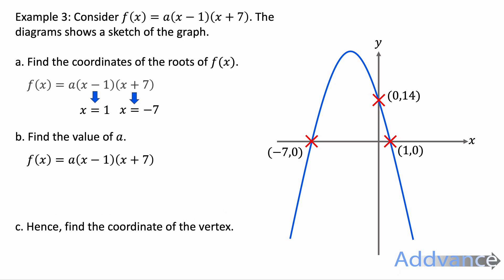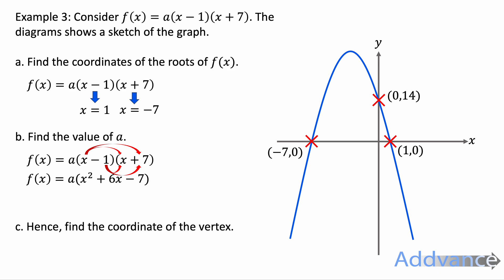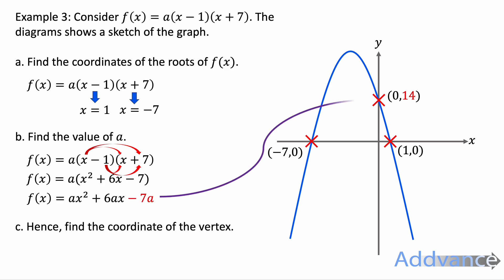Now find the value of a. We expand the brackets first to get a normal quadratic: x² + 6x − 7. Expanding the a gives ax² + 6ax − 7a. We use the fact that the number on the end equals the y-intercept. From the graph, the y-intercept is 14, so minus 7a equals 14. Dividing by minus 7, we get a equals minus 2. We compared the constant term with the y-intercept and solved for a.